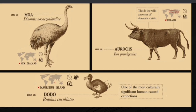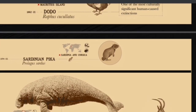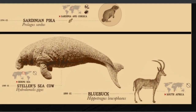The most famous extinct bird, the dodo, died around 1662 CE — one of the most culturally significant human-caused extinctions. It died due to three factors: invasive species, destruction of its habitat, and over-hunting. In 1774, the Sardinian pika went extinct due to habitat destruction and invasive species. In 1768, the Steller's sea cow went extinct. In the 1800s, the bluebuck went extinct due to over-hunting.